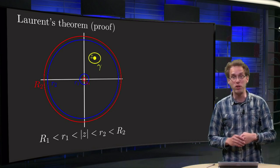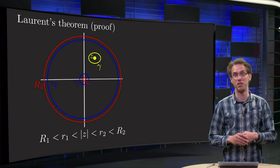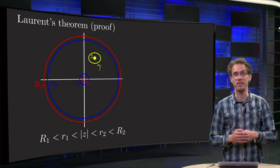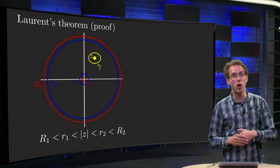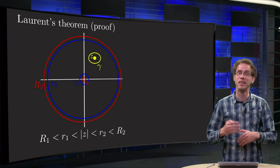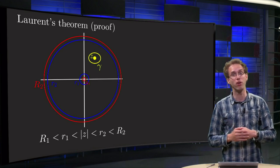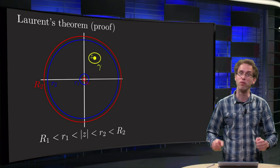If we have a function with a singular point, we can form an annulus around the singular point in which our function is analytic. For such a function we have a Laurent series instead of a power series. In this video we will learn why this is true and we will see the proof of Laurent's theorem.